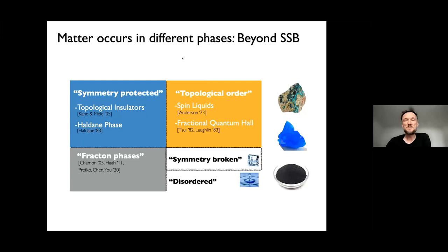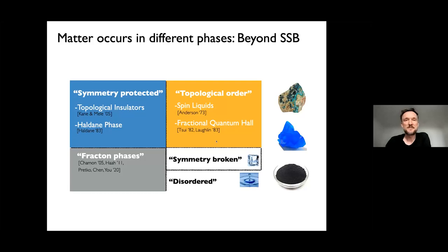The matter surrounding us can occur in various different phases of matter, and most prominently, we can distinguish phases in terms of spontaneous symmetry breaking. For example, water can appear in its liquid or solid phase, and we have no problem distinguishing these two phases and characterizing phase transitions between them. Over the last couple of decades, several phases were discovered that lie outside of this simple scheme to classify phases of matter — in particular, these topological phases were discovered.